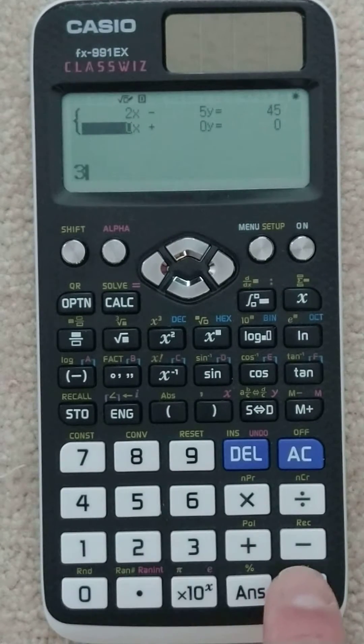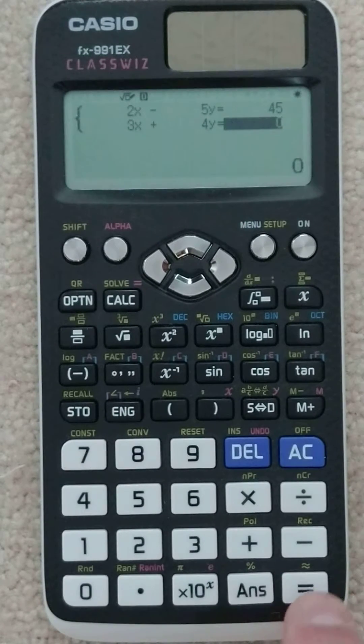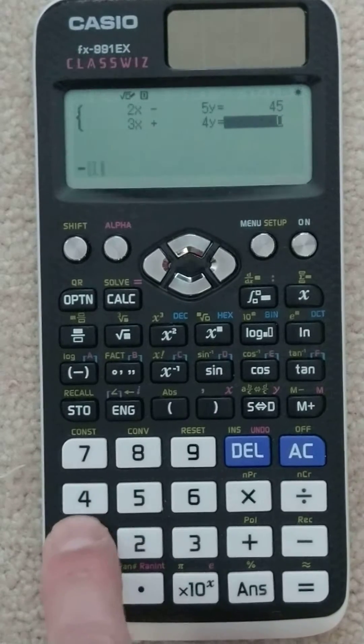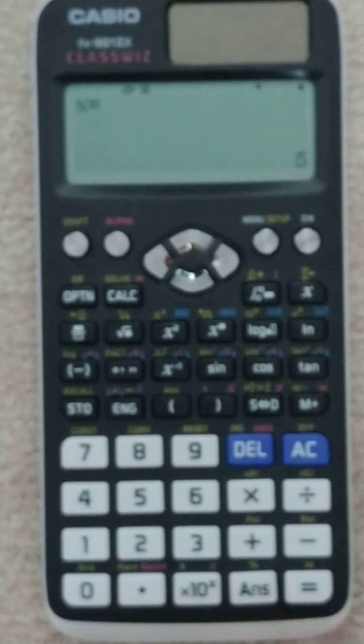3 was the coefficient here. 4, so it's 3x plus 4y equals negative 13. Hit equal, and then we hit equal one more time, tell it to go and give us our answer.